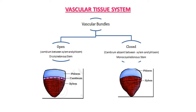In dicot stem, cambium is present, but in monocot stem it is absent. On the basis of this absence and presence of cambium, vascular bundles are classified into two types: open or closed type. In open type of vascular bundle, cambium is present in between xylem and phloem, and generally it is observed in dicotyledon stem. Due to the activity of cambium — a secondary meristematic tissue with continuous cell division capacity — such a bundle is known as an open vascular bundle.